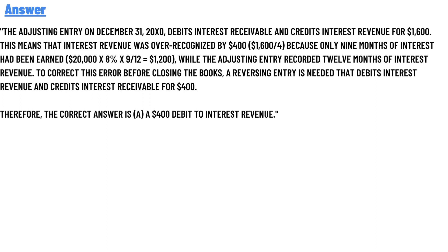The correct answer: The adjusting entry on December 31, 20X0 should debit interest receivable and credit interest revenue for $1,600. This means interest revenue was over-recognized by $400, since $1,600 divided by four — only nine months of interest had elapsed. The calculation is $20,000 × 8% × 9/12 = $1,200.